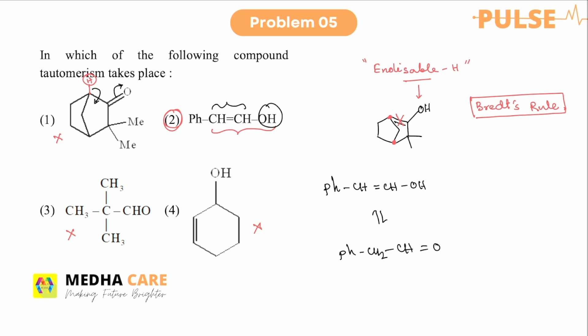Option three has aldehyde groups but no alpha hydrogen, so it is also not the answer. Option four has no functional groups that can tautomerize, so it is also ruled out. The correct answer is option two. In option two the structure is already given in the enolic form, not the keto form. So what we do is draw the keto form of this structure — it can tautomerize between the enolic and keto forms. So tautomerism is possible in structure two.